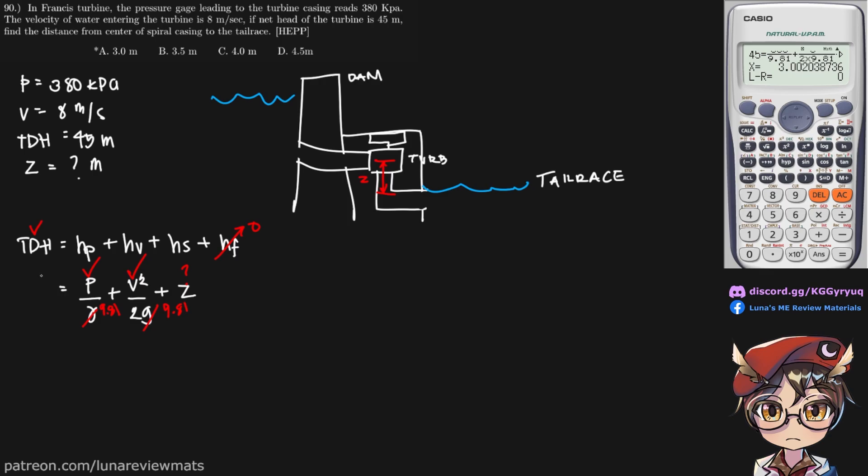Okay, so we put our values in. Okay, so these units, they cancel out to meter. These units also cancel out to meter. So we will get a value of meter for our Z as well. So let's put that in our calculator.